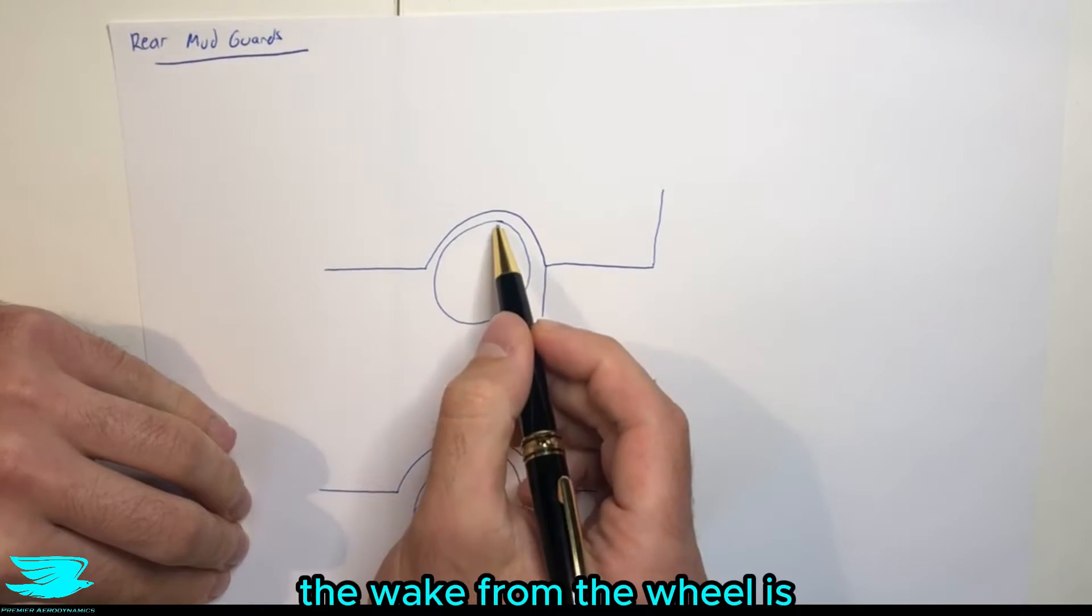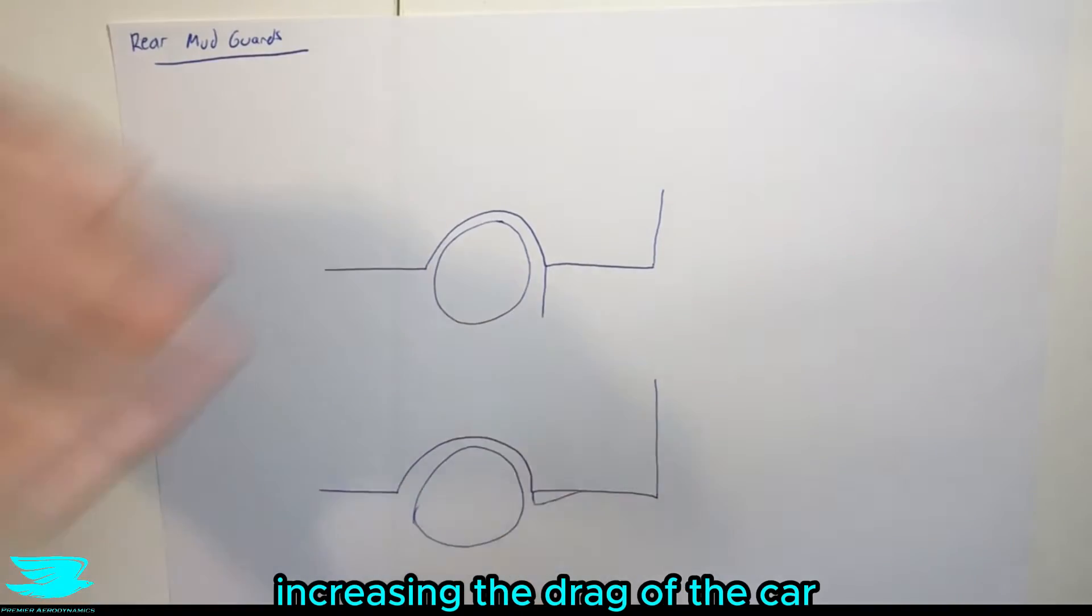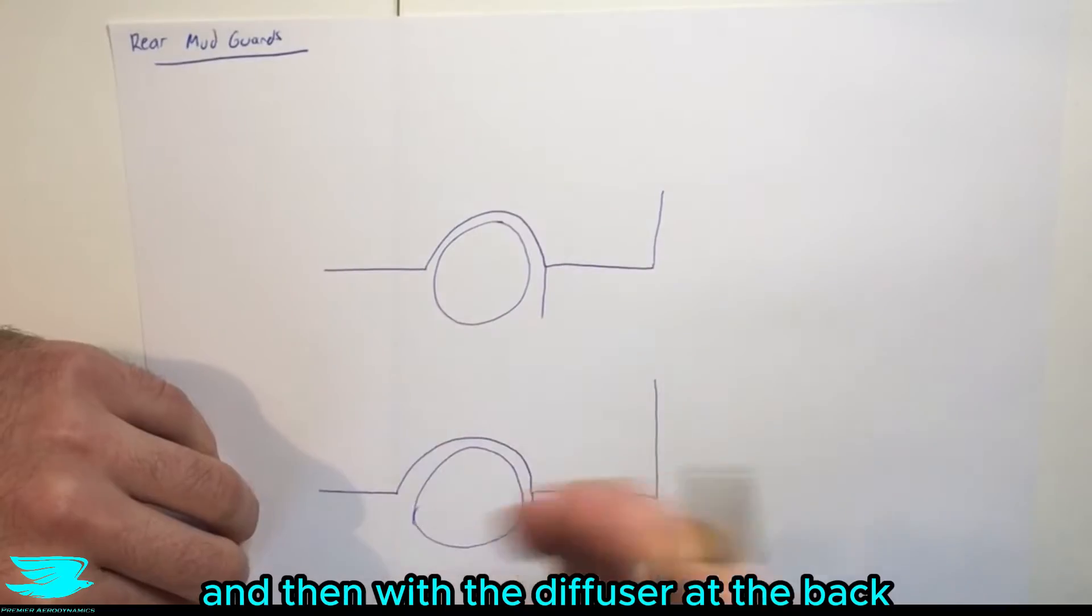To begin with, the wake from the wheel is always really a bad thing. It's always going to be increasing the drag of the car, especially when we're at the back here with the wake coming through and then we have the diffuser at the back.